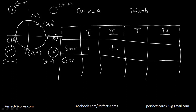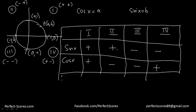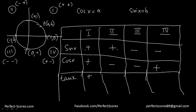So b — and therefore sine x — is negative in the third and fourth quadrants. Cosine of x equals the x-coordinate a, which follows the pattern: plus, minus, minus, plus across the four quadrants. Since tangent of x equals sine x over cosine x: plus over plus is plus, plus over minus is minus, minus over minus is plus, and minus over plus is minus. So tangent x has signs: plus, minus, plus, minus.